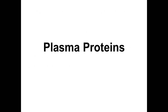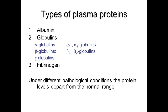The types of plasma proteins are albumin, globulin, and fibrinogen. Globulins are of three types: alpha globulin, beta globulin, and gamma globulin. Alpha and beta globulins each have two subtypes — alpha 1 and alpha 2, and beta 1 and beta 2 globulin. Under different pathological conditions, protein levels depart from the normal range. Electrophoresis is a method used to differentiate the types of plasma proteins.